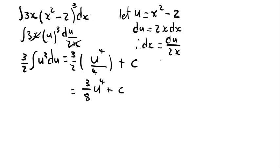A person paying attention might ask why C is not multiplied by 3 over 2. The reason we're not multiplying 3 over 2 by C is because C represents an arbitrary number that we don't know, so even if it's multiplied by 3 over 2 it will still be a constant. We leave it as C also because this is an indefinite integral. Don't forget you have to substitute back the value of u and write your answer in terms of x.